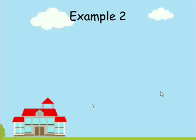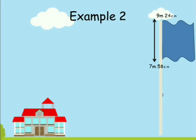Example two: the flagpole outside the school is 7 meters 58 centimeters tall, but the school decided to make a new flagpole that is 9 meters 24 centimeters tall. How much taller is the new flagpole? What do we need to do here?